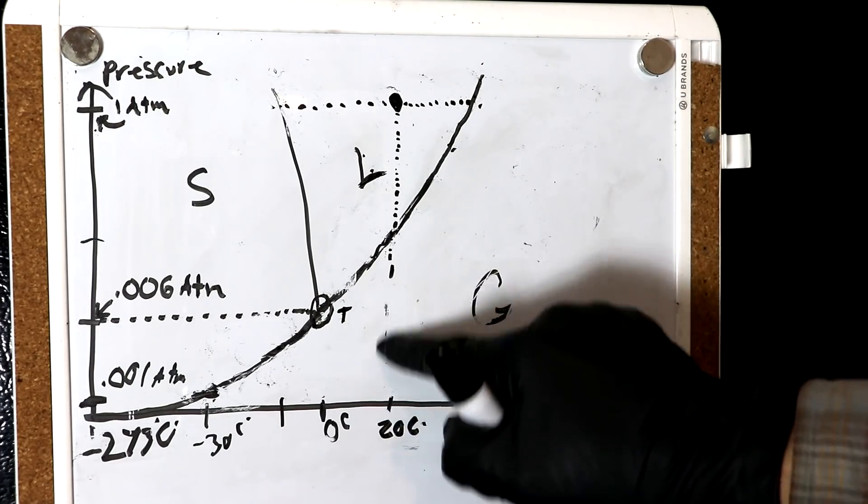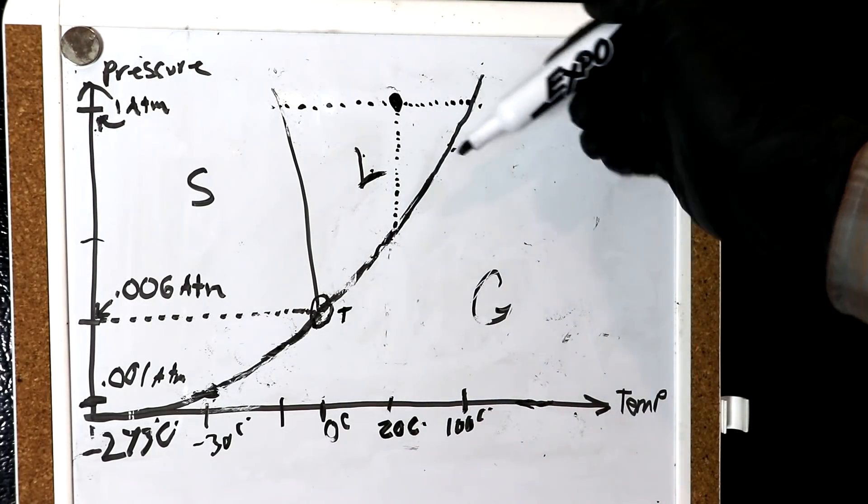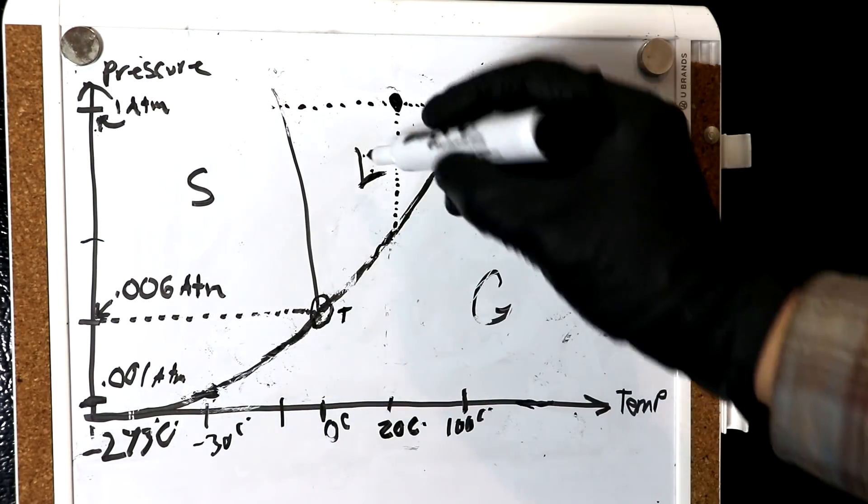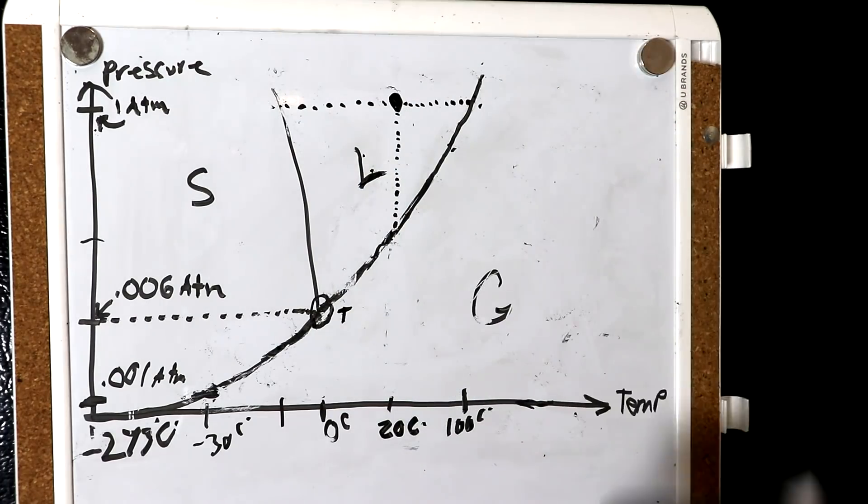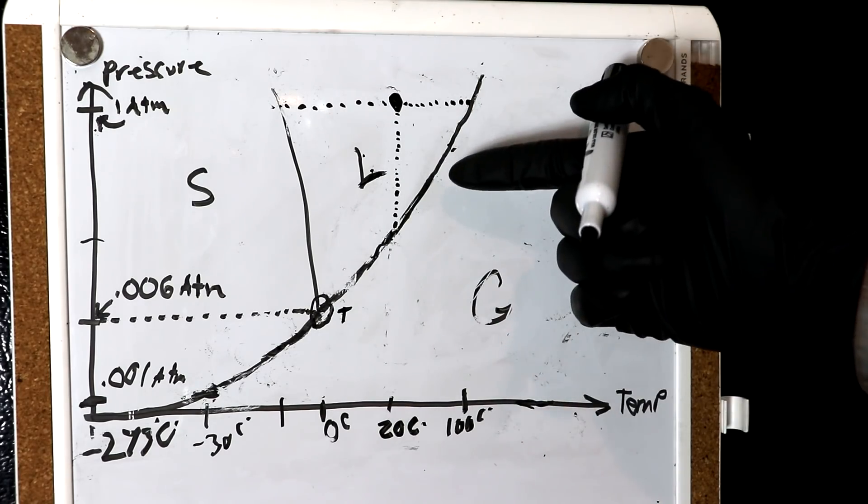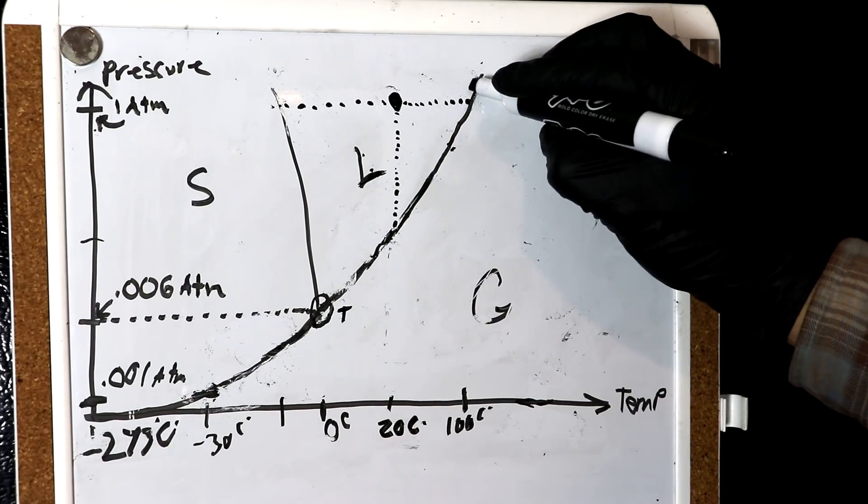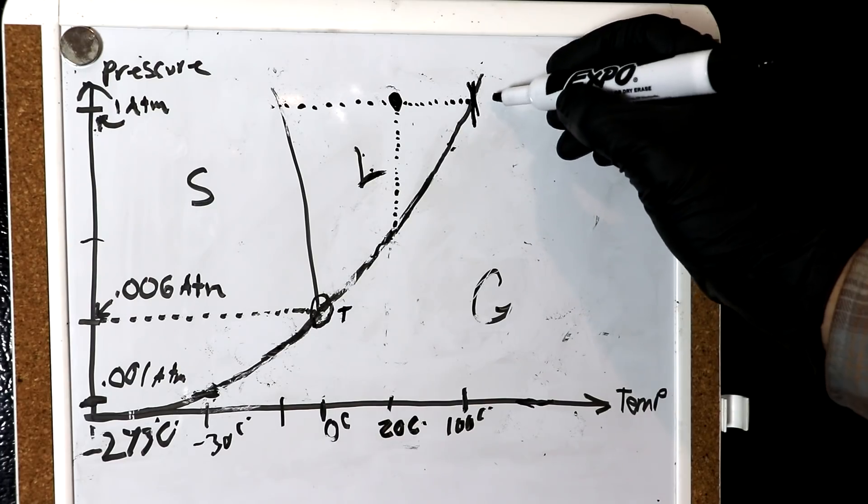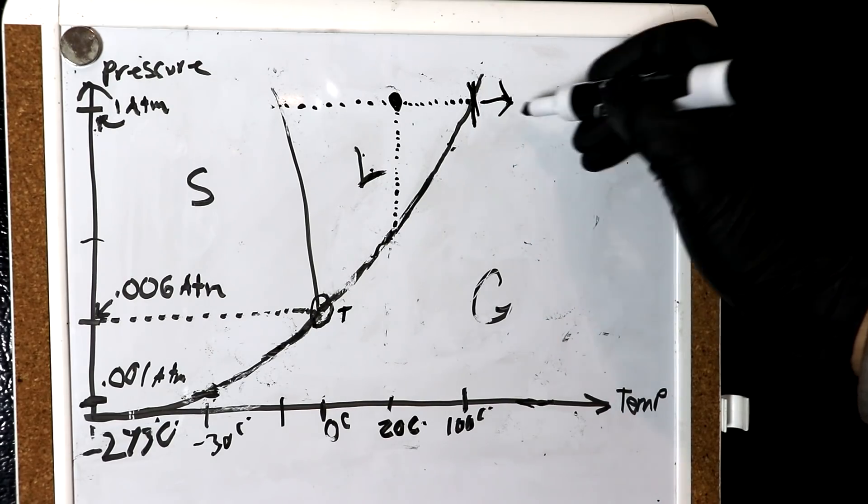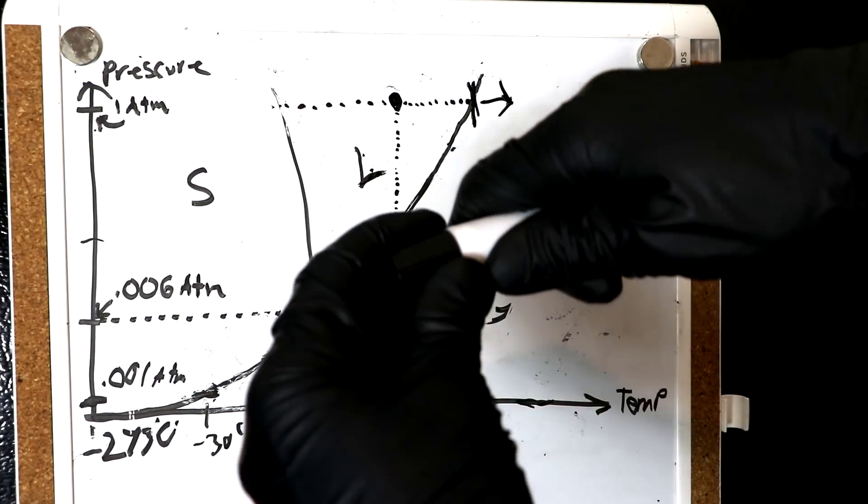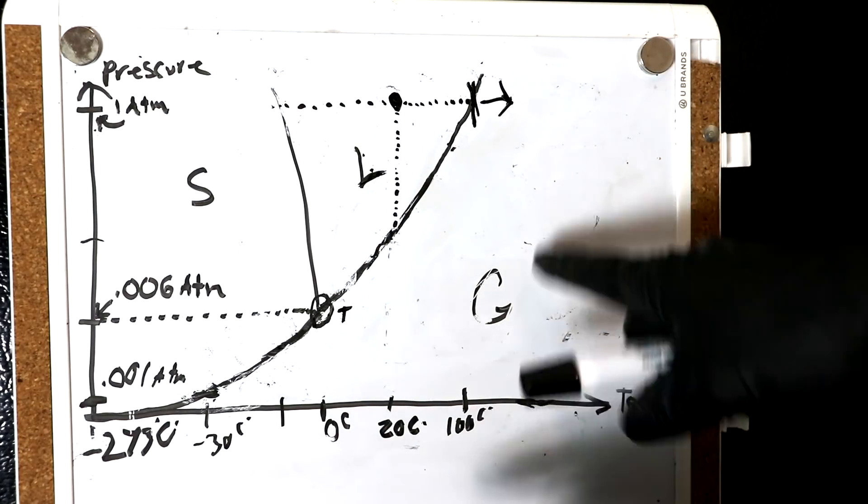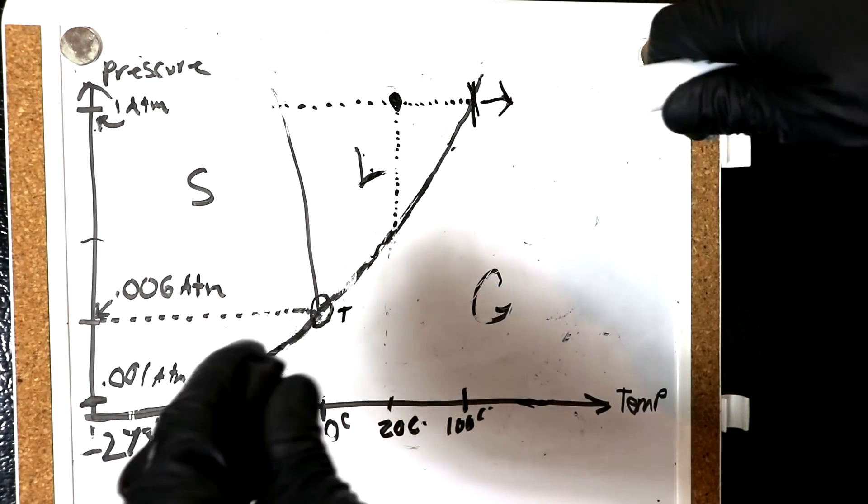But there's a problem. You see, in order to cross these lines, you need to add or remove considerable energy. To go across this line, you need the heat of vaporization. This line is the heat of fusion. You know that if you take a pot of water and heat it up, it doesn't just all flash to steam instantly as soon as it hits 100 degrees Celsius. It'll sit there right at 100 degrees Celsius and boil. This is because in order to pull the water molecules apart, it takes energy. In a liquid, the water molecules are basically touching. In a gas, they're very far apart.